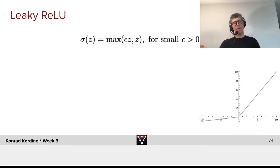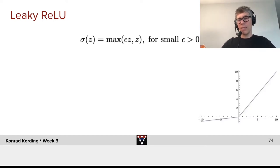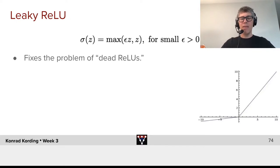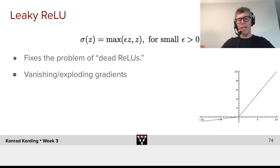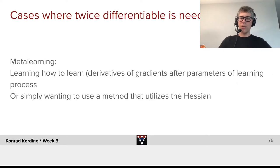An alternative — a very simple alternative — is leaky ReLU, where we basically replace it with a small but still positively increasing function in the zero area. It fixes the problem of dead ReLUs and in a way helps us deal with vanishing and exploding gradient problems. It's not used very much in practice compared to ReLU, but it often makes problems go away.